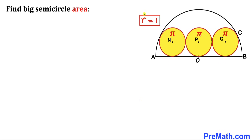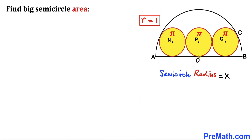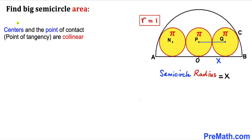So the radius of these identical circles is 1 centimeter. Now let's assume the radius of this semicircle is x centimeter. I have connected centers P and Q, and recalling the crucial fact that centers and the point of contact are collinear — so centers P and Q and their point of contact lie on the same line.